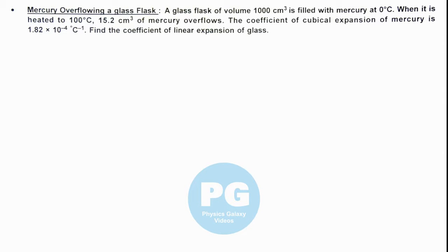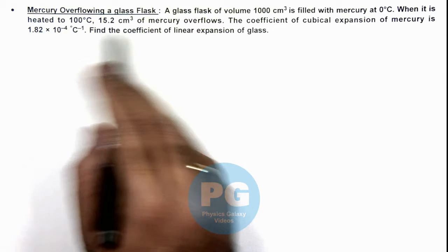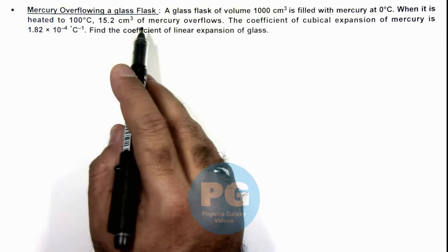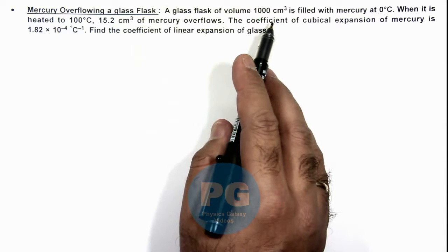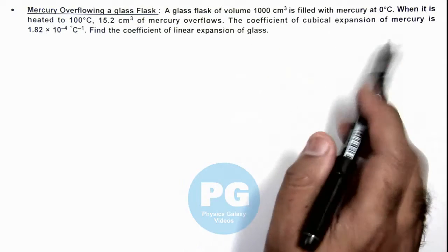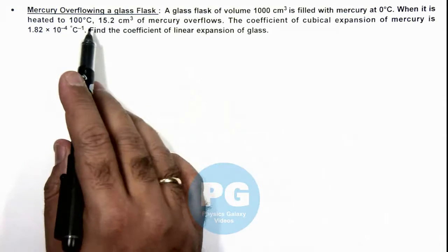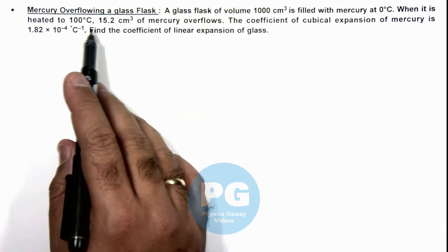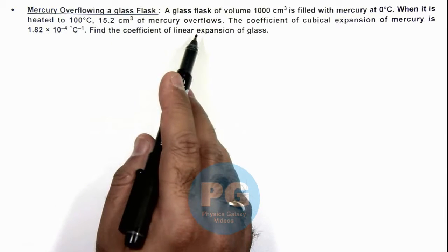In this illustration we'll analyze the mercury overflowing a glass flask. We are given that a glass flask of volume 1000 cm³ is filled with mercury at 0°C. When it is heated to 100°C, 15.2 cm³ of mercury overflows.